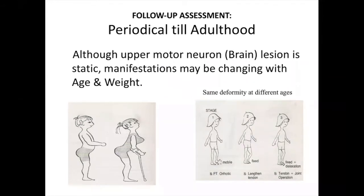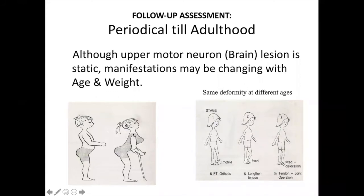Cerebral palsy is basically a static disorder. But sometimes children who were standing and walking well initially start needing crutches at 13 to 18 years. This is not because of disease progression but because of growth, weight gain, and the third period of development. You have to take care of this and advise accordingly.